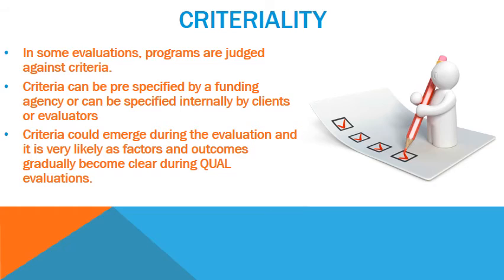The book goes on to talk about criteria. In some evaluations, programs are judged against criteria. The criteria can be pre-specified by a funding agency, or specified internally by clients or evaluators. Criteria could also emerge during the evaluation, which is very likely as factors and outcomes gradually become clear during qualitative evaluations. Qualitative practitioners tend to be skeptical that criteria can be objective and that all criteria can be identified in advance. Preordinate criteria will focus data collection and analysis properly, but superimposing common criteria can amount to fitting square pegs into round holes.